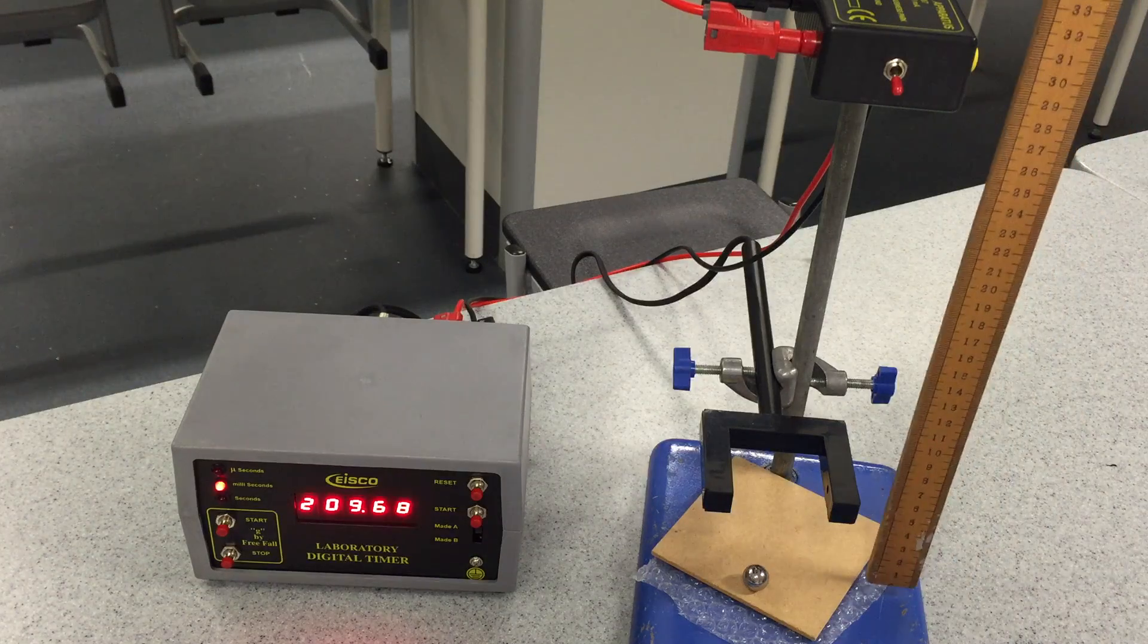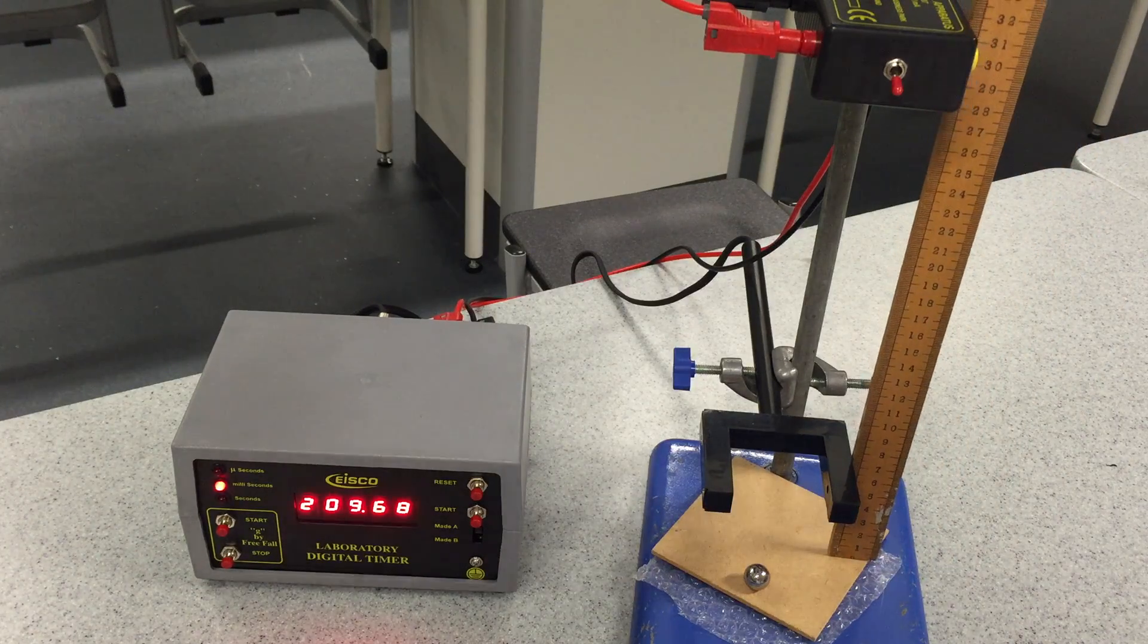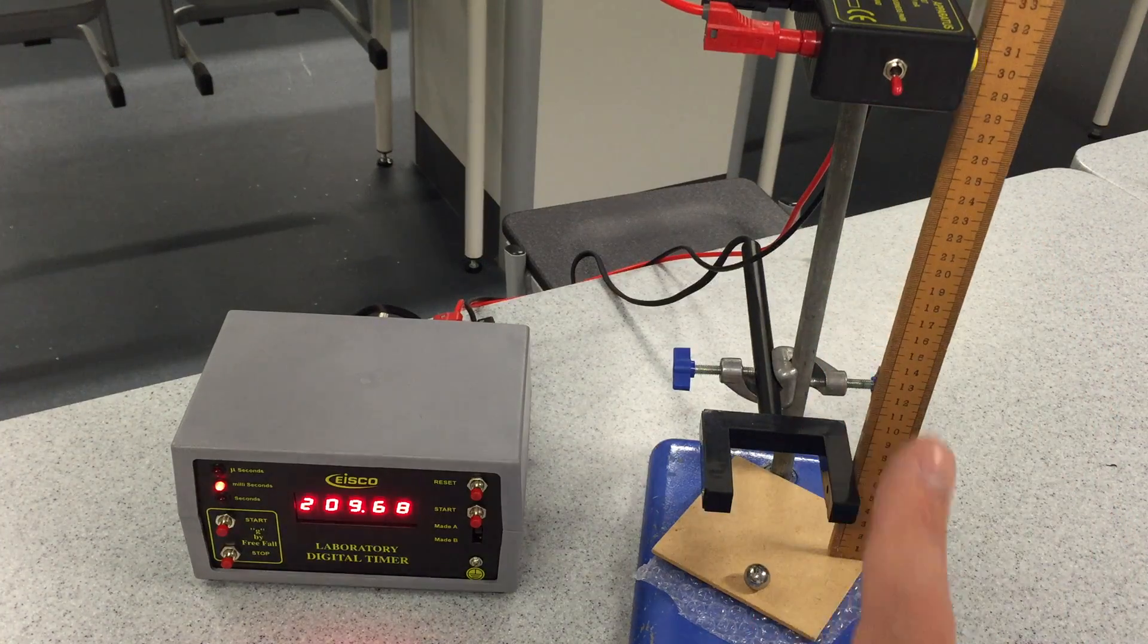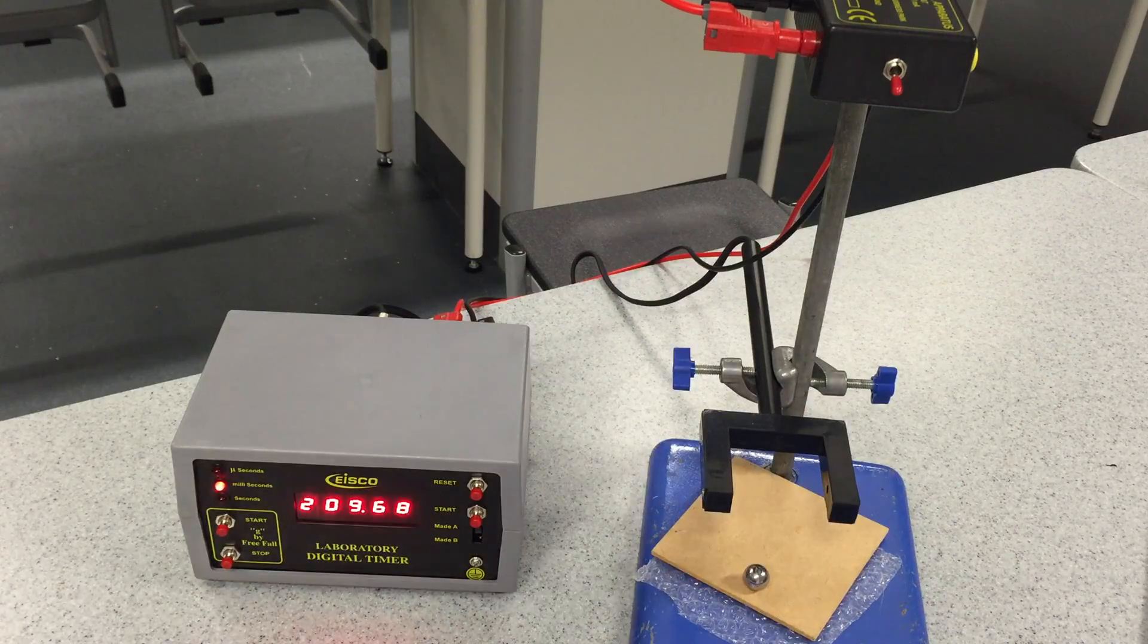And of course, I'm going to control the height by finding the distance between the centre of the light gate and the bottom of the ball. I suppose it's quite an important point there, the bottom of the ball.